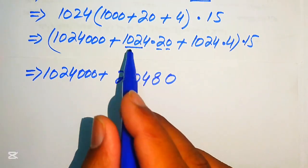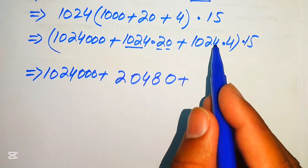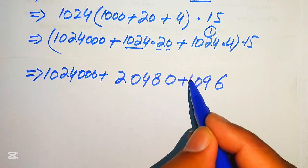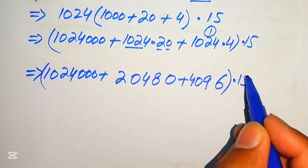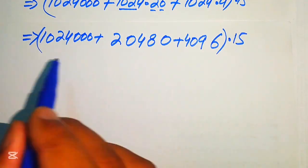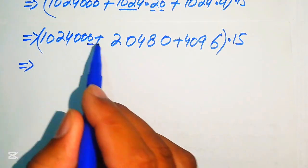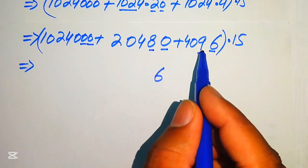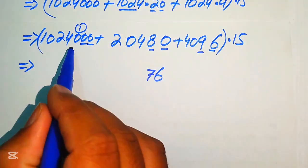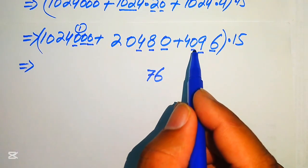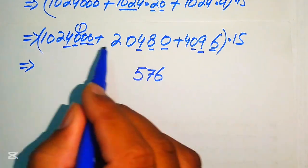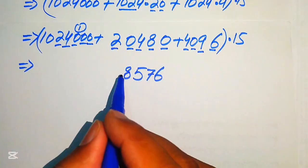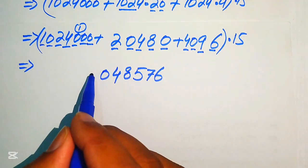We now add the partial products. Multiplying digit by digit: 4 times 4 is 16, write 6 carry 1; 4 times 2 is 8, plus 1 is 9; 4 times 0 is 0; 4 times 1 is 4. Adding all partial products column by column, with carries, we obtain 1024 squared equals 1,048,576.